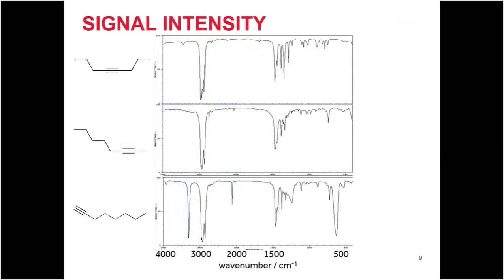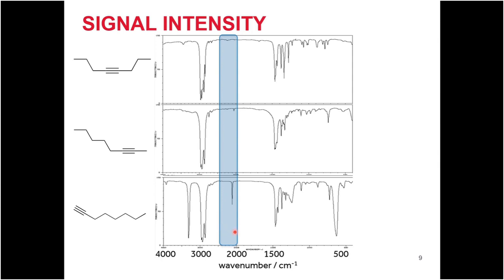We can also differentiate between different kinds of alkynes. A symmetrical alkyne sits in the middle of a chain of equal length on both sides, containing a plane of symmetry. A non-terminal asymmetric alkyne is positioned closer to one end of the chain. And a terminal alkyne has a hydrogen at the end. In the 2,000–2,400 wavenumber region: the symmetric alkyne shows no peak, the asymmetric alkyne shows a very small peak, and the terminal alkyne shows a larger peak.